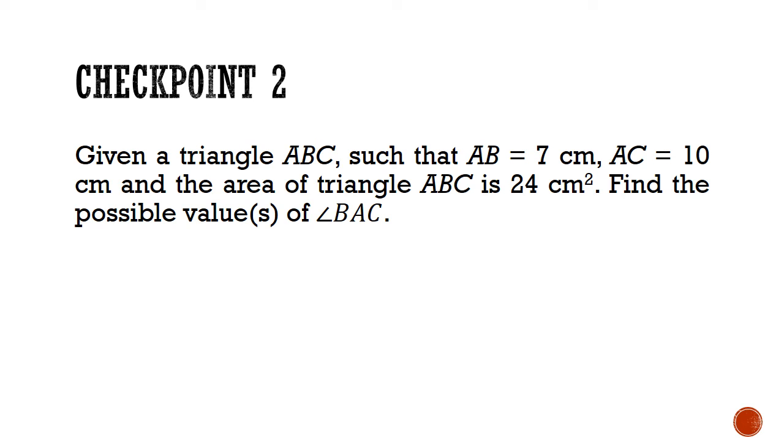Let's move on to checkpoint 2. Let's try to solve another problem involving this trigonometric area formula. Given a triangle ABC such that AB equals 7 cm, AC equals 10 cm, and the area of the triangle is 24 cm squared, find the possible values of angle BAC. Pause the video here and give this question a good try.